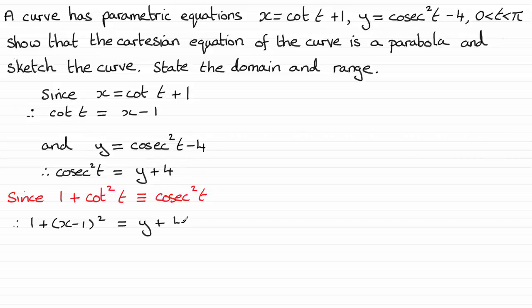And with that, I can make y the subject and we therefore have y equals x minus 1 all squared, and then we've got 1 minus the 4 and that's going to give me minus 3. I could leave it like this. It makes it very easy to sketch the curve when it's in this particular form.